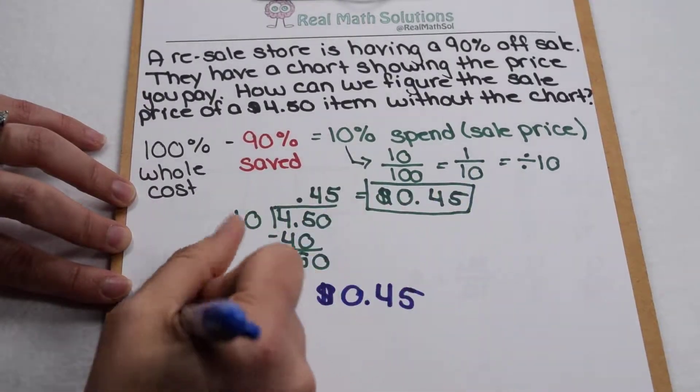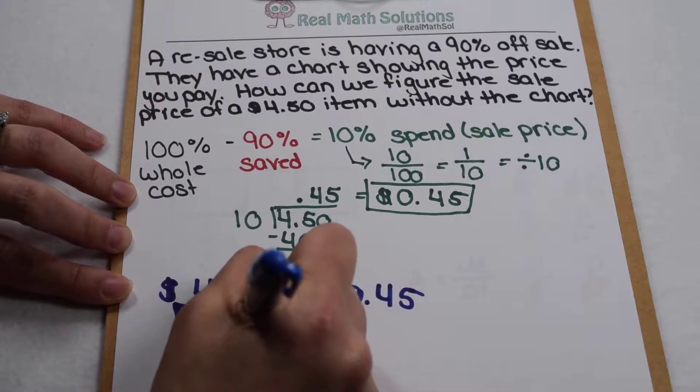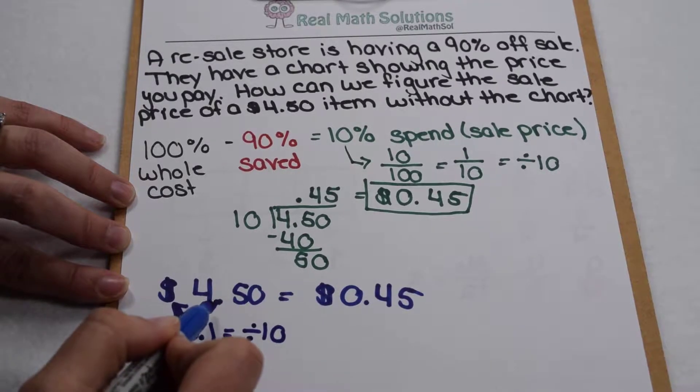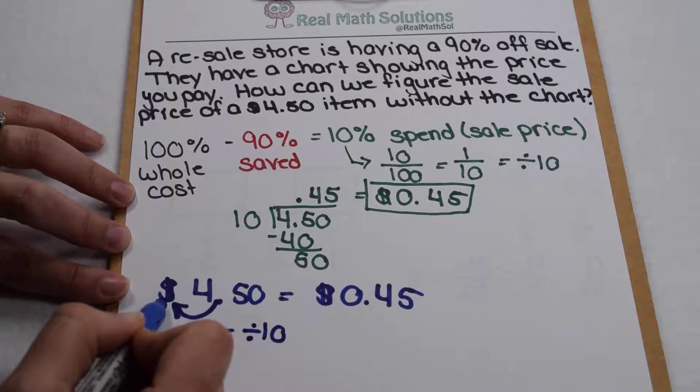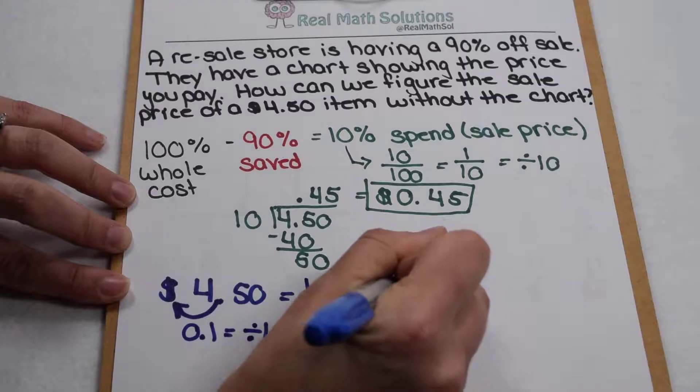Well as a decimal 1 tenth is 0.1. So if I want to divide by 10 by just looking at my decimal places I can simply move my decimal one place to the left in my money to divide by 10 and that would also give me my sale price of 45 cents.